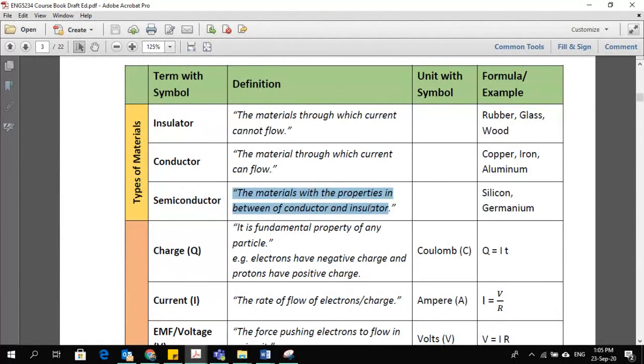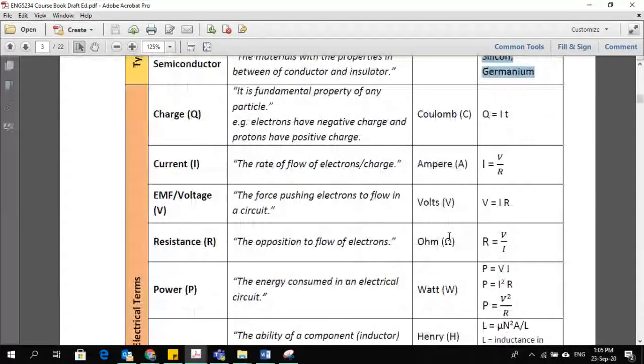Third one is the semiconductor. It is the material with properties in between conductor and insulator. They have both properties or you can say they lie in the middle of insulator and conductor based on resistivity or conductivity. These are the common examples here. Apart from this, you will see other basic definitions like charge, which is the fundamental property of any particle. Like we have positive charge, negative charge, their unit and their formula how to find charge.